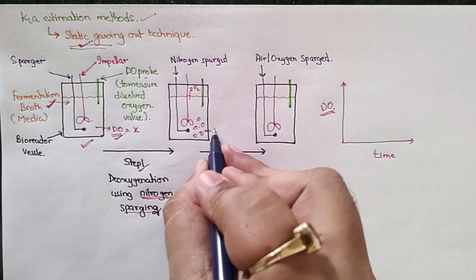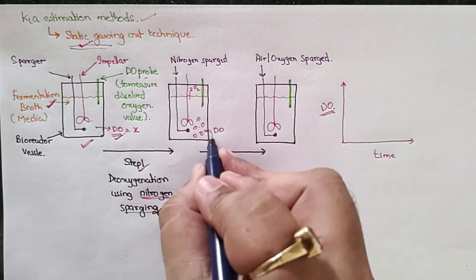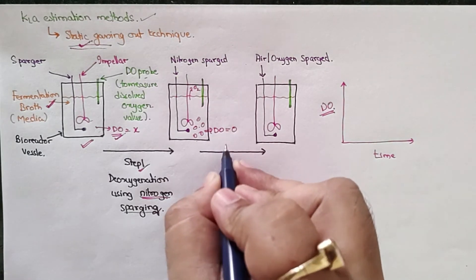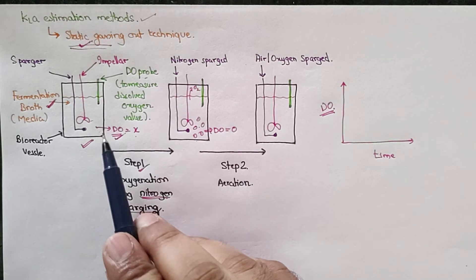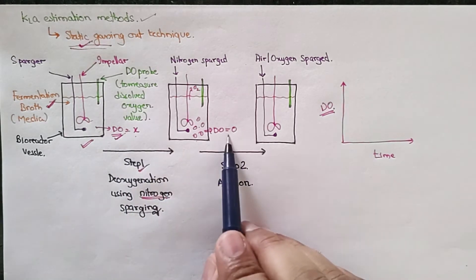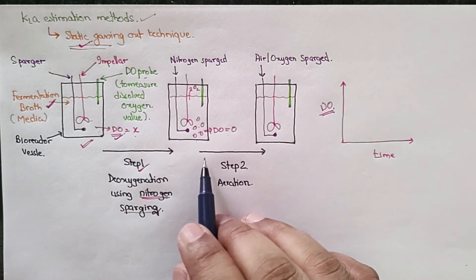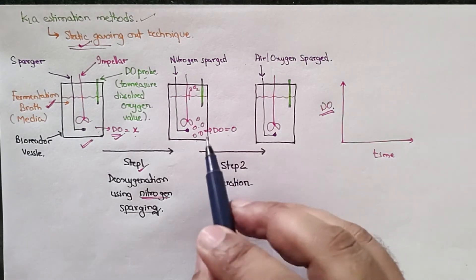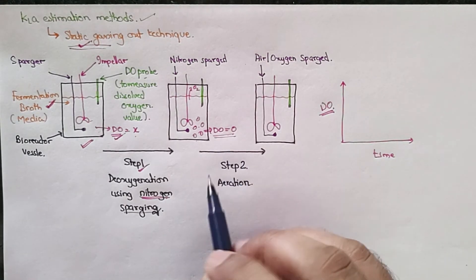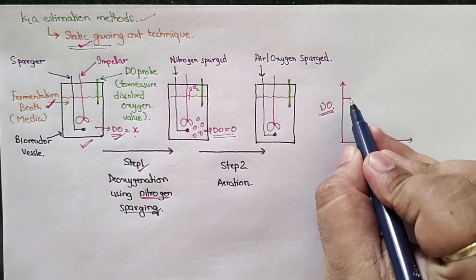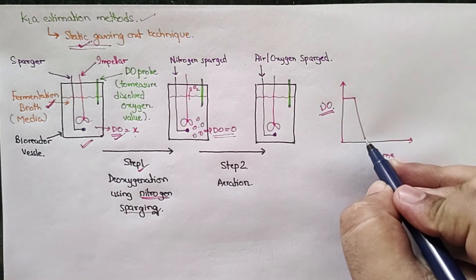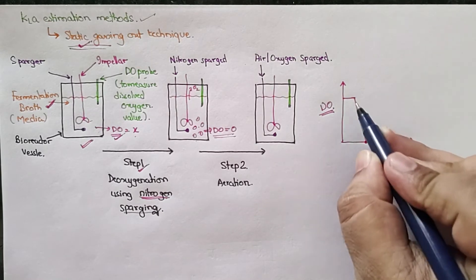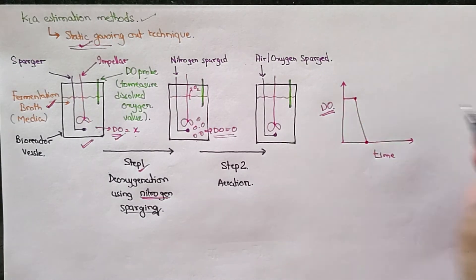Such that the DO value of this media will become zero. All the oxygen that was there inside this media initially has been removed in this step. Initially we were saying it has certain degree of DO; then after sparging of nitrogen, the dissolved oxygen has been completely removed.